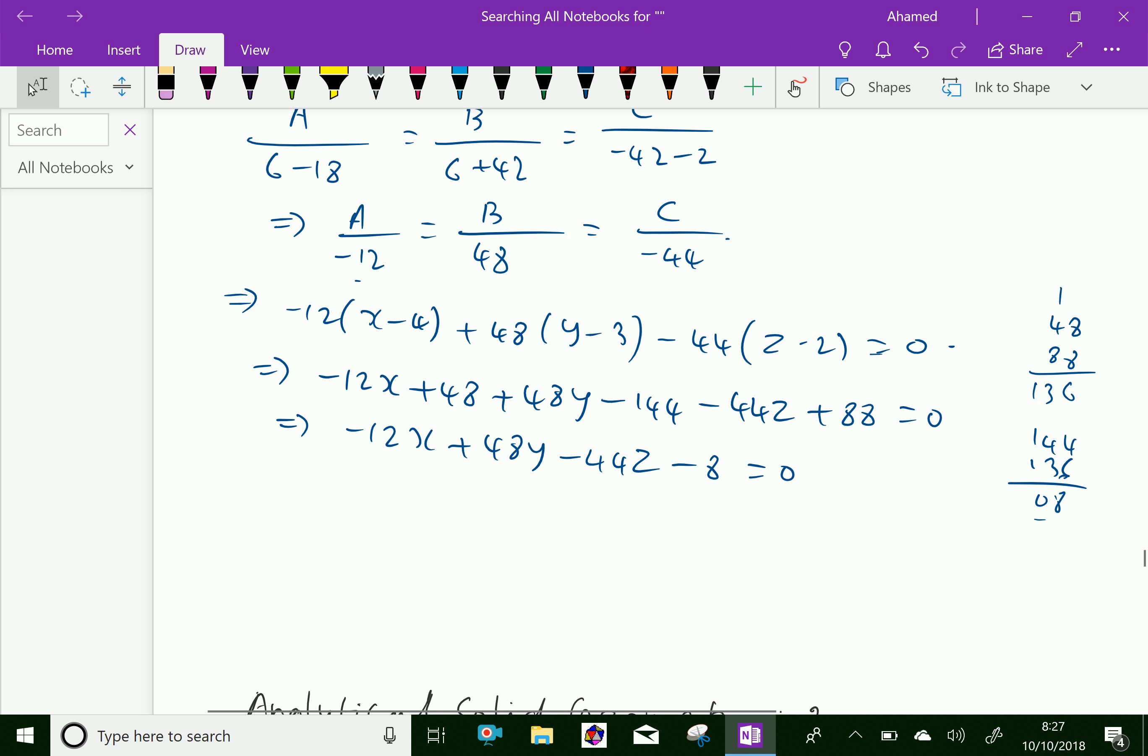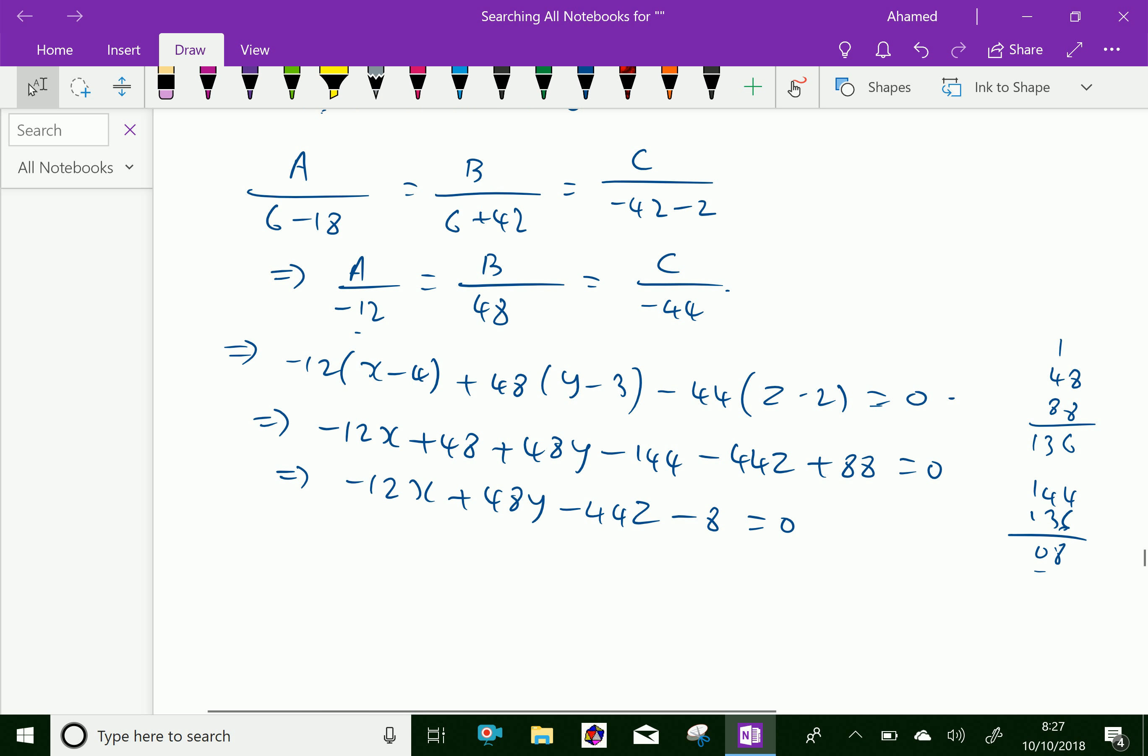Then divide throughout by -4: we get 3x - 12y + 11z + 2 = 0.